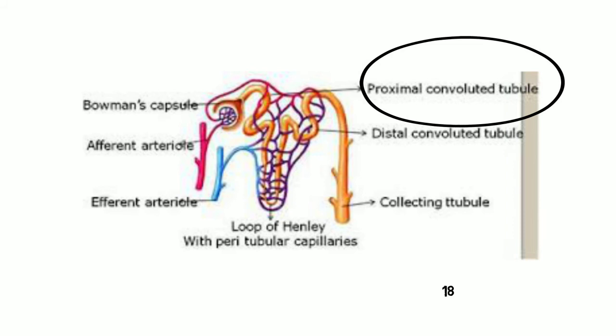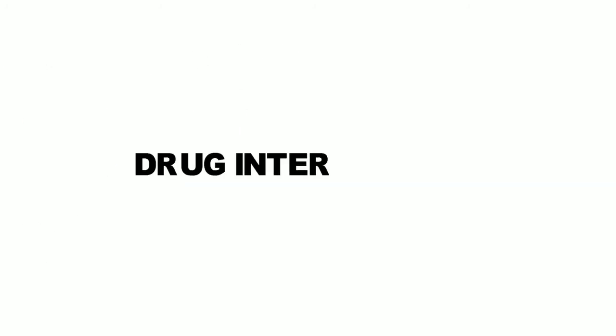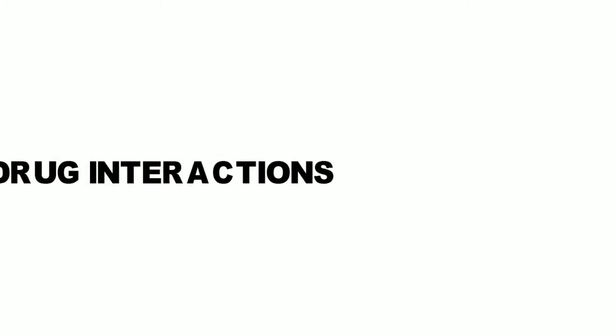Oxypurinol is reabsorbed by the proximal convoluted tubule, giving it a half-life of 18 to 20 hours. It is used to treat different blood disorders like leukemia and polycythemia.